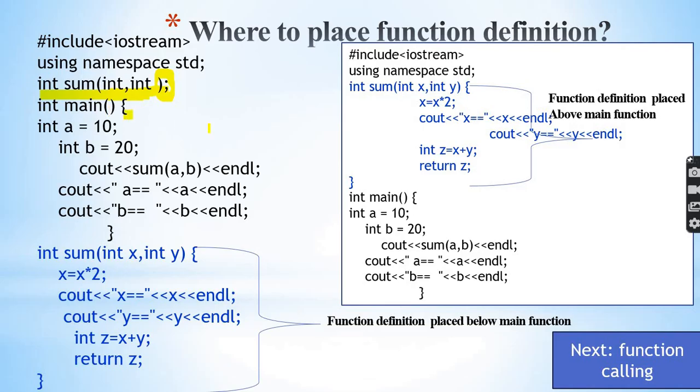Then we have the main function. Main function starts. Below the main function is the function definition. Function definition is a block of code that tells what the function will do. The function definition is placed below main function.